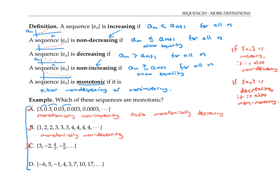The fourth sequence is not monotonic because of the first few terms. However, from the fifth term on, the terms are monotonically non-decreasing, and we could also say monotonically increasing.